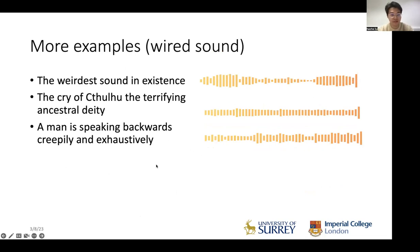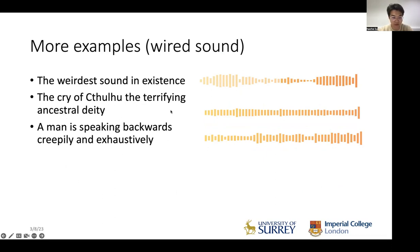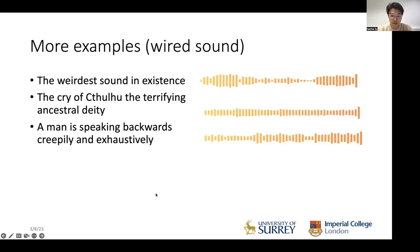Here are some out-of-distribution samples — text prompts that would never have existed in our training data. For example: 'the weirdest sound in existence,' 'the cry of a terrifying ancestral deity,' and 'a man speaking backward, creepily and exhaustively.' These don't make full sense as descriptions but the model still produces some results, though they sound a bit weird and unpleasant.